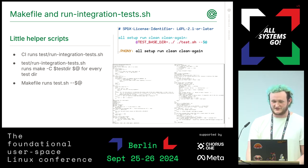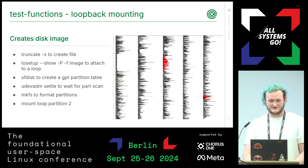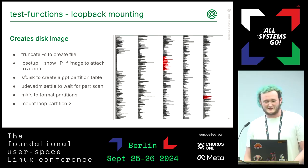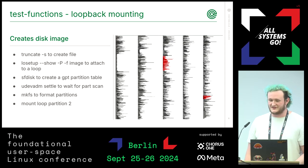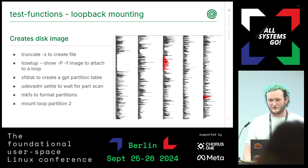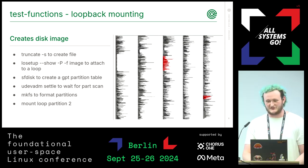The interesting stuff starts in test.sh — actually, this is test-functions. First, it makes a disk image. These are the code sections highlighted in red. This is a very involved process, but it's only run once. Each test then takes a snapshot of the disk before running, and this snapshot is then discarded afterwards.